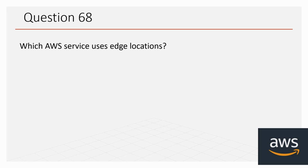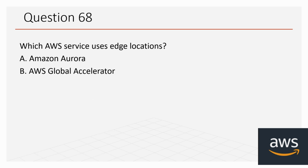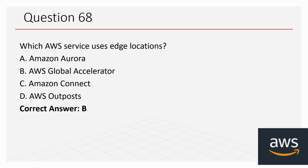Question 68: Which AWS service uses edge locations? Options: A: Amazon Aurora, B: AWS Global Accelerator, C: Amazon Connect, D: AWS Outposts. The correct option is B, AWS Global Accelerator.